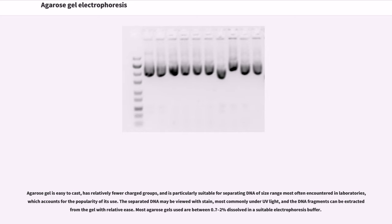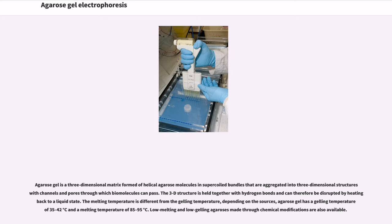Most agarose gels used are between 0.7 to 2% dissolved in a suitable electrophoresis buffer. Agarose gel is a three-dimensional matrix formed of helical agarose molecules in supercoil bundles that are aggregated into three-dimensional structures with channels and pores through which biomolecules can pass. The 3D structure is held together with hydrogen bonds and can therefore be disrupted by heating back to a liquid state. The melting temperature differs from the gelling temperature; agarose gel has a gelling temperature of 35 to 42°C and a melting temperature of 85 to 95°C.